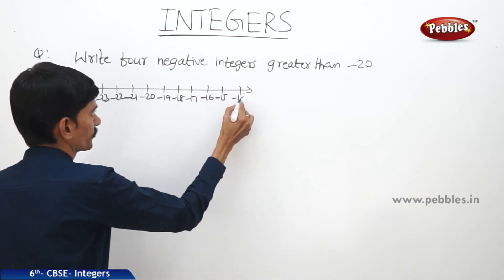Write 4 negative integers less than minus 10. Let us draw the number line.